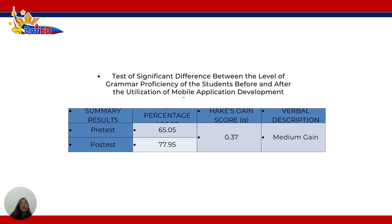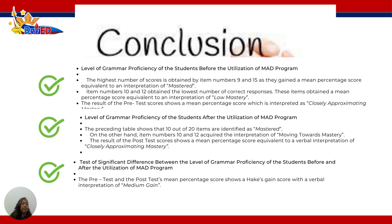Based on the results of the pre-test and post-tests, a Hays gain score of 0.37 was obtained with a verbal description of medium gain.